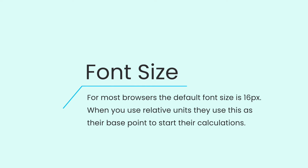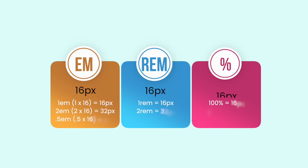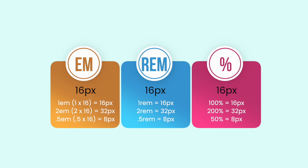Let's start with font size. For most browsers, the default font size is 16 pixels. When you use relative units, they use this as their base point to start their calculations. So, using 16 pixels as our example: 1EM is 1 times 16 pixels, so 16. Whereas 2EM is 2 times 16, so it would make it the equivalent of 32 pixels. Whereas 0.5 would be half, so only 8 pixels.